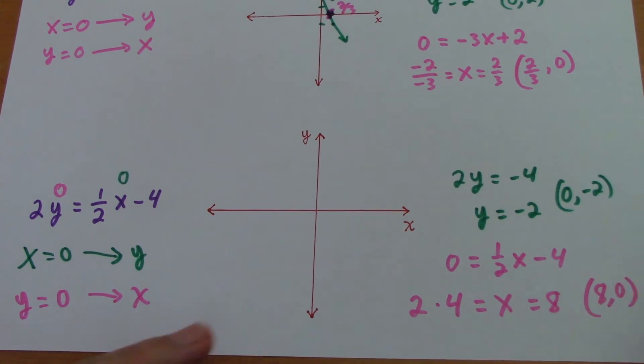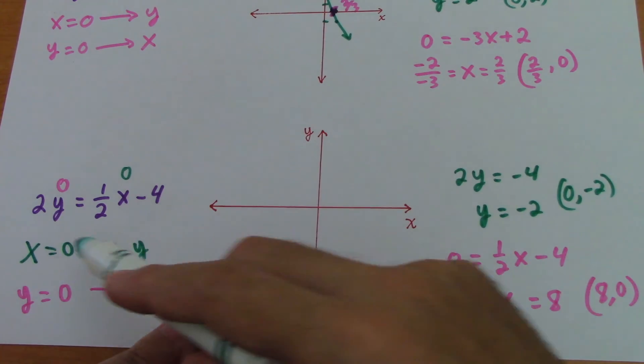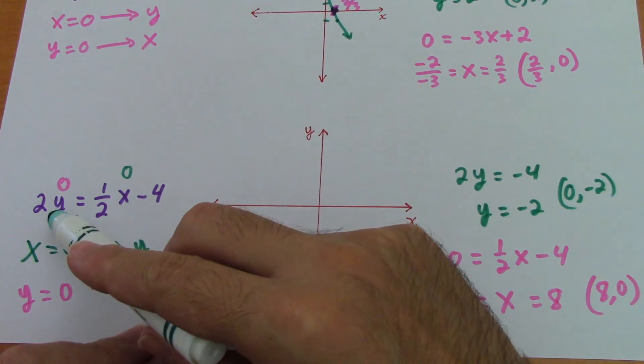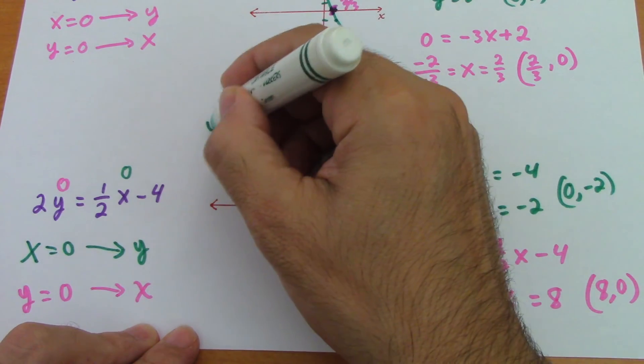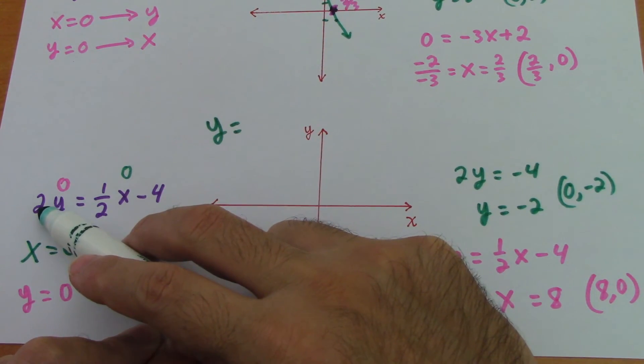So that means the point would be 8 comma 0. So let's do the graph to have a better idea. How we graph this equation first, we need to write it in slope intercept form, this equation. So what we do is, y equal, this equation is equivalent to y equal...